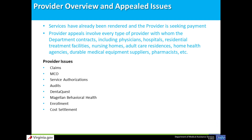The Appeals Division handles two levels of provider appeals: informal and formal. Providers can file an informal provider appeal of any adverse action taken by DMAS that includes appeal rights. Some things providers typically appeal are when medical services have been rendered and the provider is seeking payment, enrollment in the Medicaid program, recoupment of previously paid amounts, audits disallowing incentive payments, and notifications setting prospective payment rates.